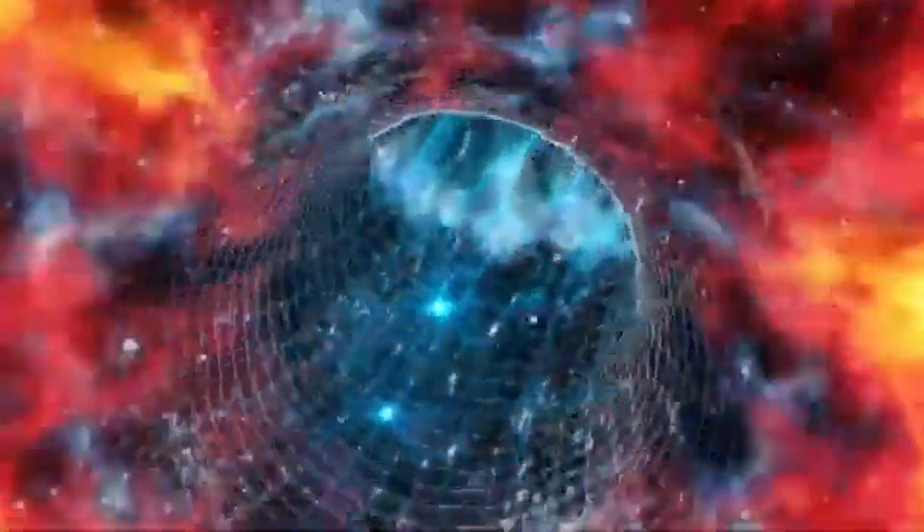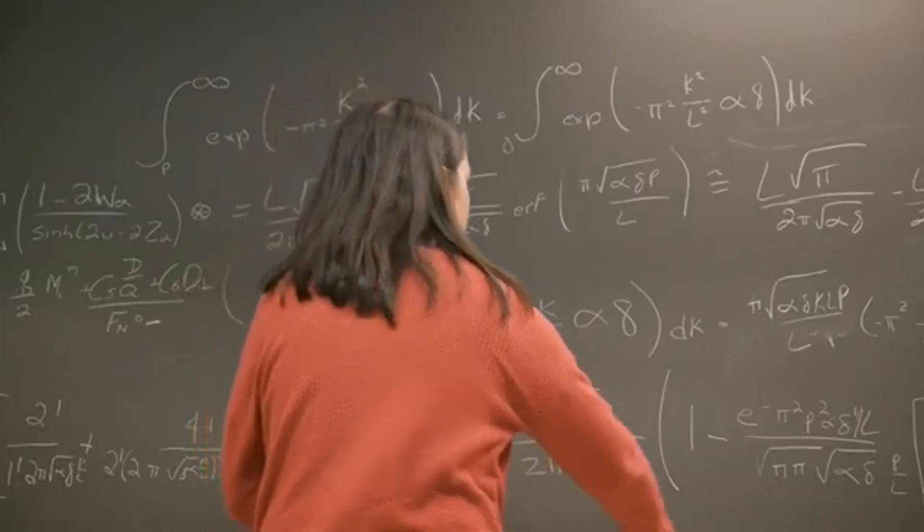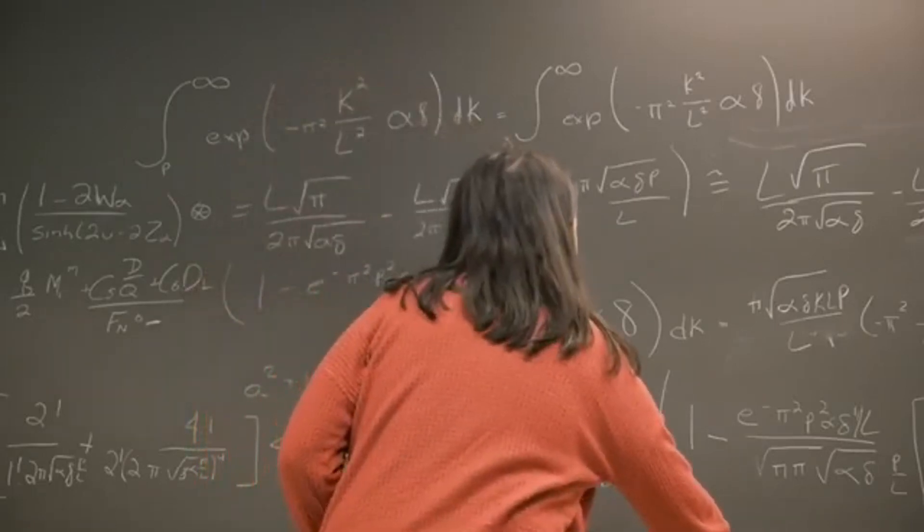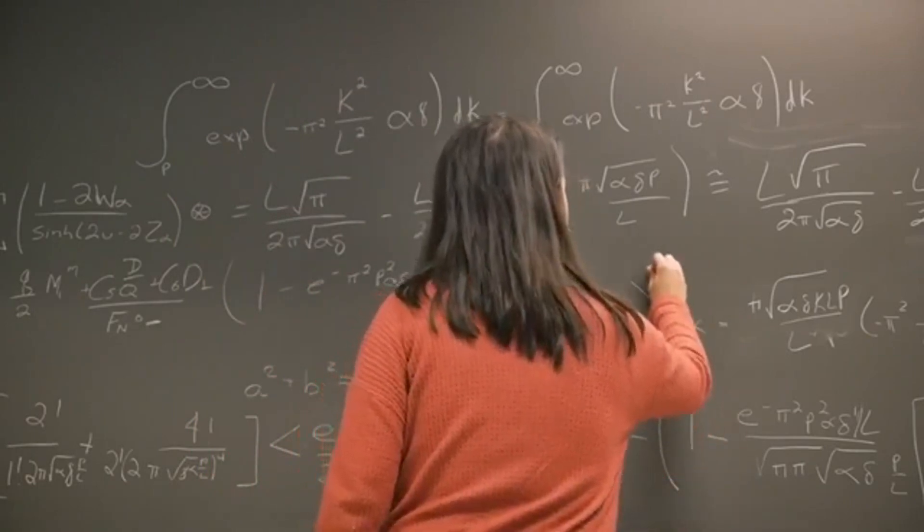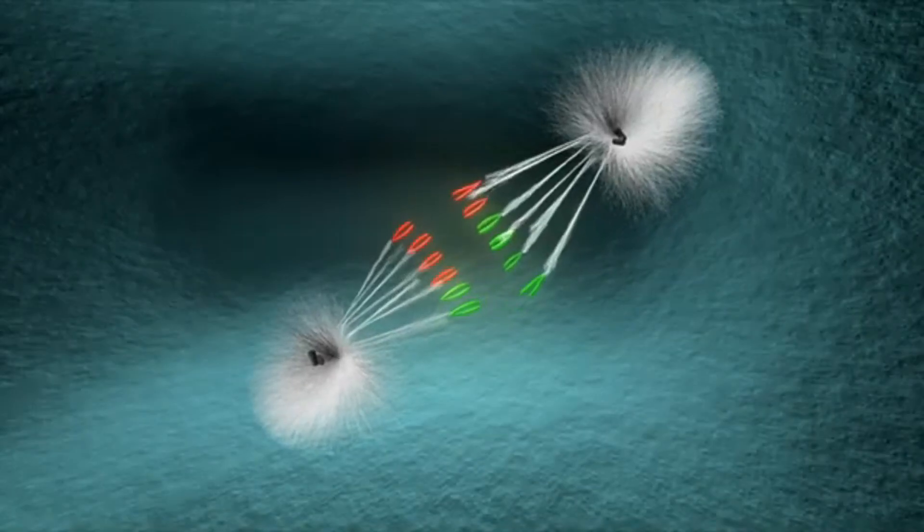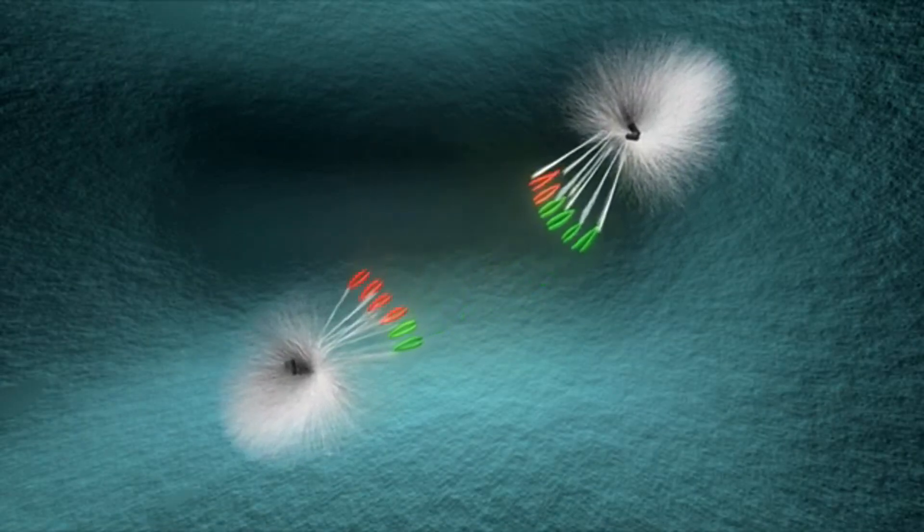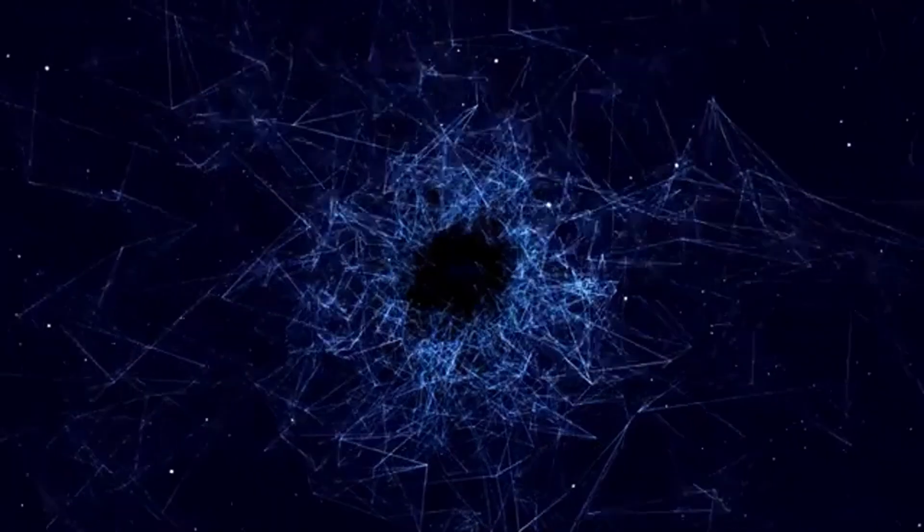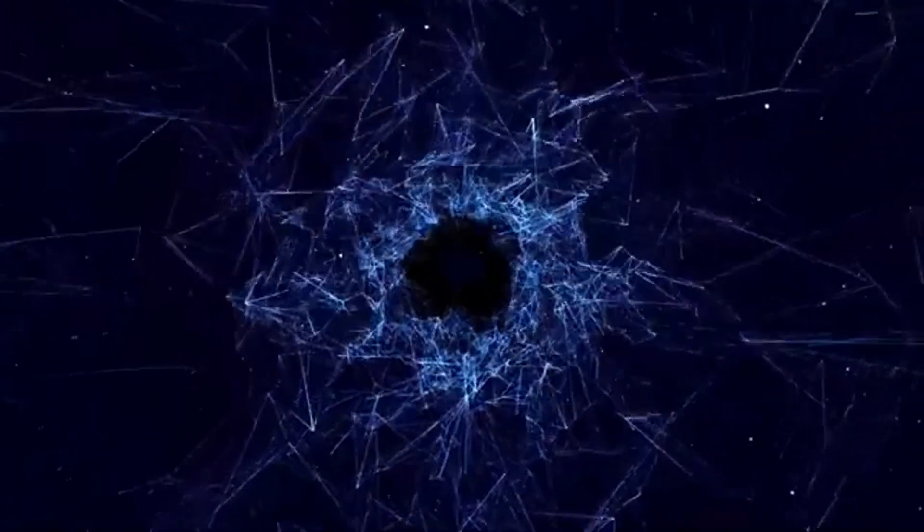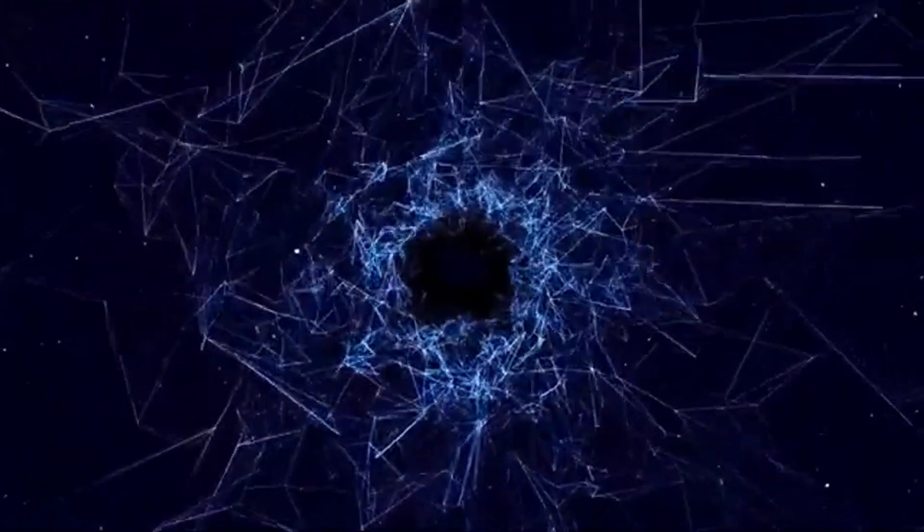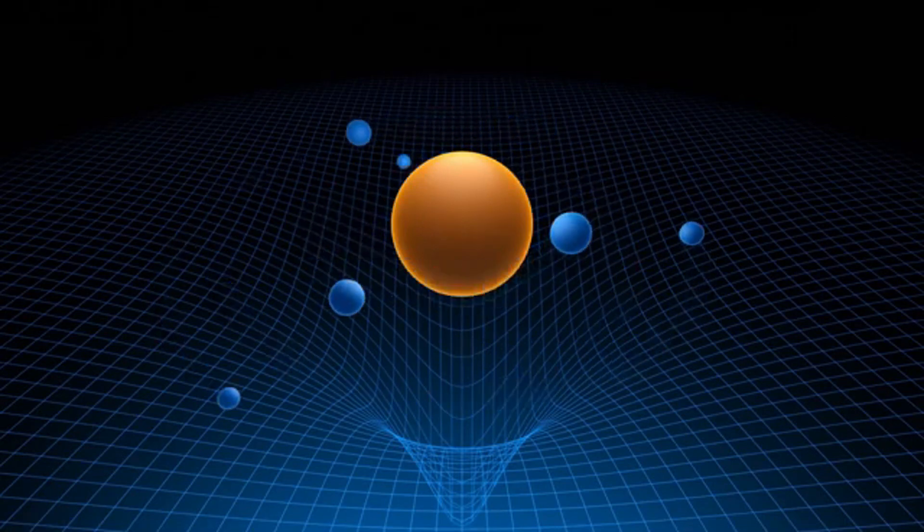But catching an axion is like trying to hear a whisper in a hurricane. These particles don't play nice with ordinary matter. They don't glow, they don't spark, and they slip through detectors like ghosts. Traditional experiments, like those hunting for the Higgs boson, rely on particles crashing and leaving trails. Axions? They're too subtle for that. Scientists had to get creative, looking for indirect signs like axions turning into photons under intense magnetic fields.